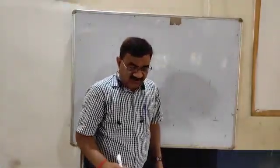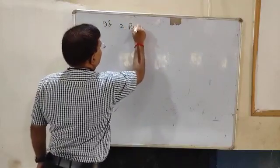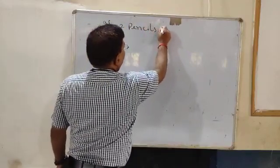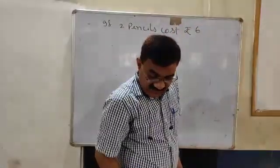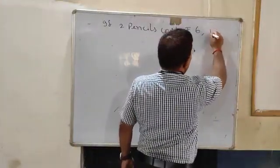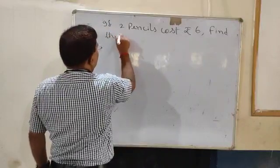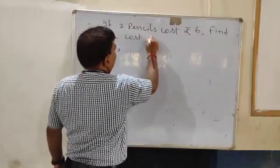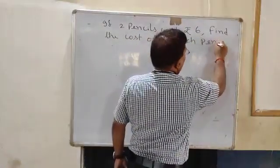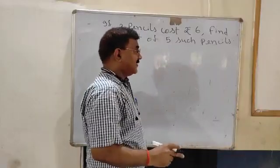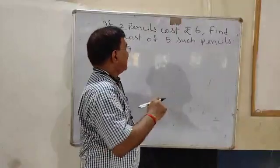If two pencils cost rupees 6, find the cost of five such pencils. Let me revise the arrow method I have taught once more.